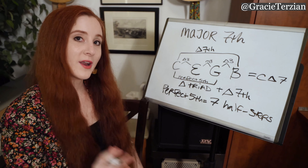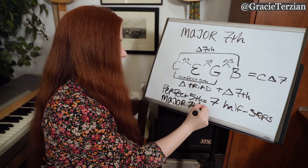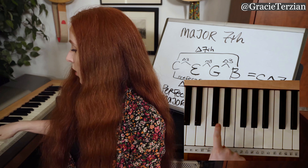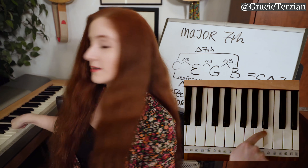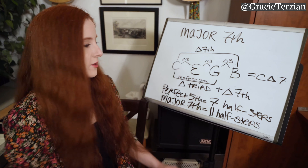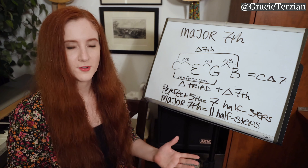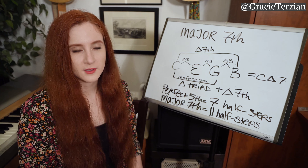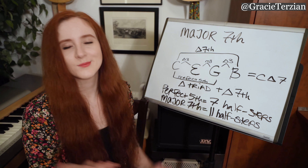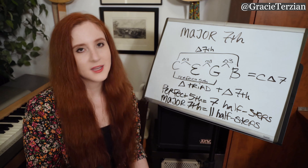Last but not least, what about a major seventh? From C all the way to B: 1, 2, 3, 4, 5, 6, 7, 8, 9, 10, 11 — eleven half steps. I know it's a little confusing that the numbers don't match up, but you don't have to necessarily have the number of half steps memorized when you're starting out. Don't go crazy trying to memorize the number of half steps — I'm just telling you for those of you who are interested and ready to start memorizing that.